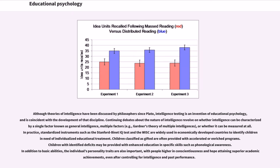Although theories of intelligence have been discussed by philosophers since Plato, intelligence testing is an invention of educational psychology. Continuing debates about the nature of intelligence revolve around whether it can be characterized as a single factor (general intelligence), multiple factors such as Gardner's theory of multiple intelligences, or whether it can be measured at all. Standardized instruments are widely used to identify children in need of individualized educational treatment. Children classified as gifted are often provided with accelerated or enriched programs, while those with identified deficits may receive enhanced education. People higher in conscientiousness and hope attain superior academic achievements, even after controlling for intelligence and past performance.